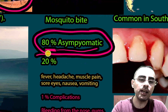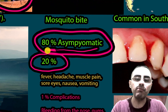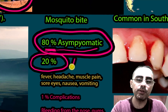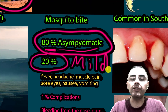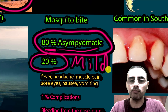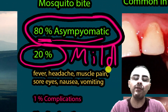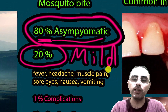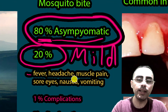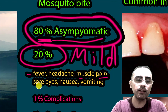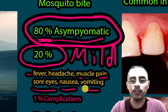In the remaining approximately 20% of cases, there are mild symptoms. Symptoms are mild and not serious in most cases. It's usually flu-like symptoms such as fever, headache, muscle pains, sore eyes, nausea, vomiting, and diarrhea.